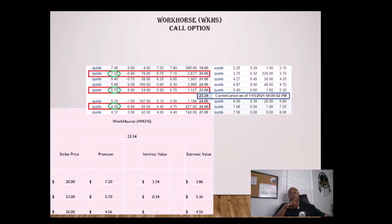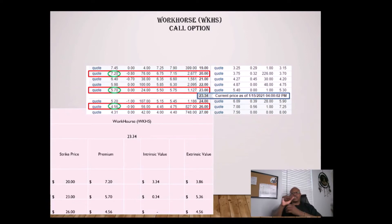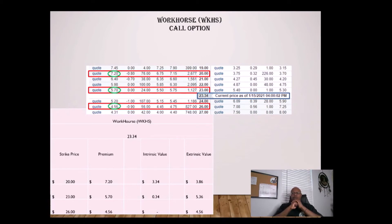The second example is another in-the-money strike price of $23. The premium is $5.70. The difference between the strike price and the current price is only 34 cents, so it's only 34 cents in the money. The intrinsic value of that $5.70 is 34 cents. The rest — $5.36 — is all extrinsic value, time value.